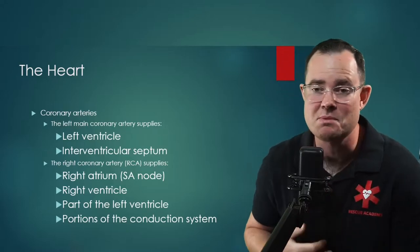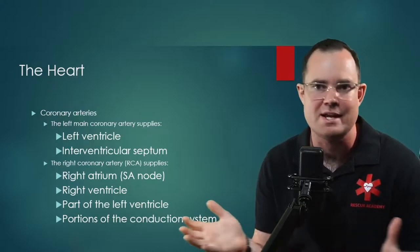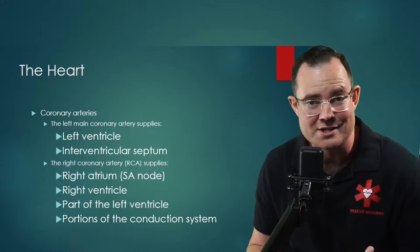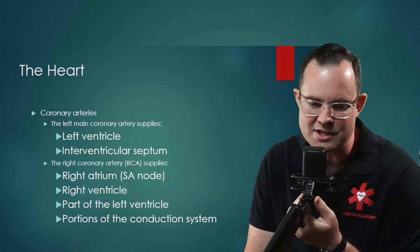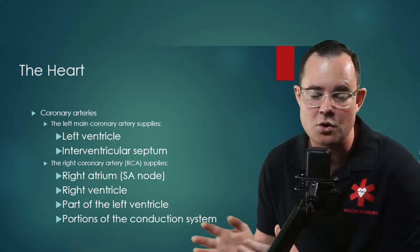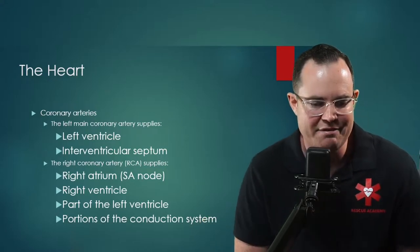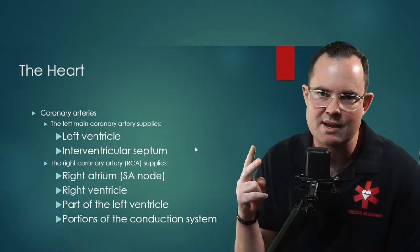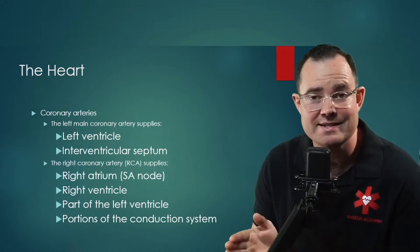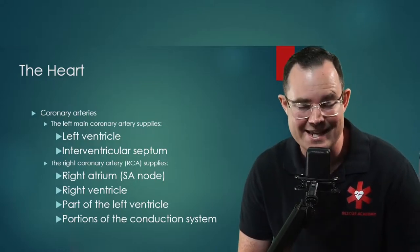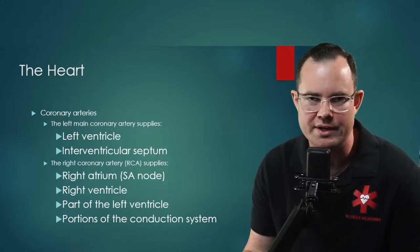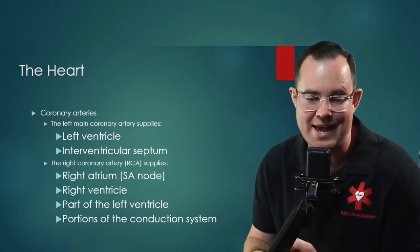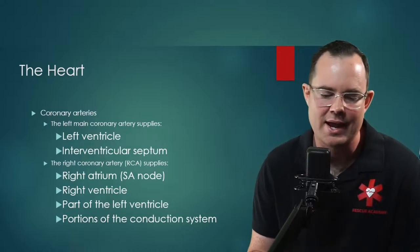A little bit about coronary arteries. Do you need to memorize what they feed? Yes, you kind of do — on your national registry exam you will see questions about this. The left main coronary artery supplies the left ventricle and the septum, and it divides into two things: the LAD (left anterior descending), which descends onto the heart, and the circumflex. So left main coronary artery divides into the LAD and the circumflex.